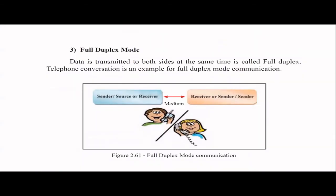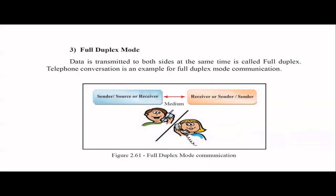Next is full duplex mode, where both parties can transmit at the same time. For example, in a telephone conversation, anybody can speak at any time — you don't have to wait until the other party finishes. So sender and receiver can do data transmission simultaneously in full duplex mode. To summarize, the three modes are simplex, half duplex, and full duplex.